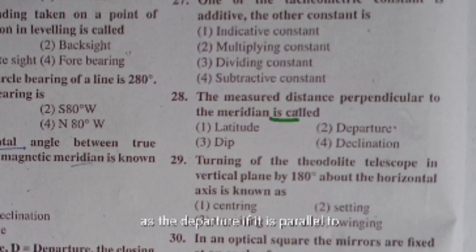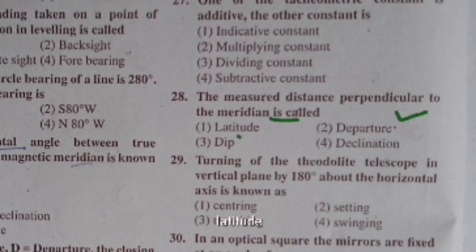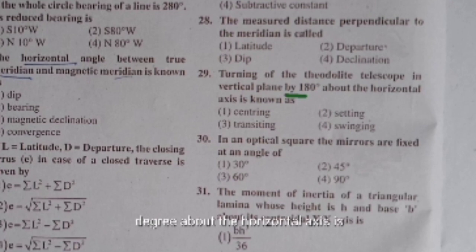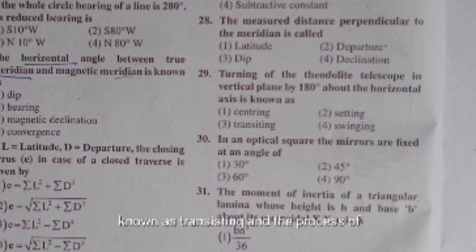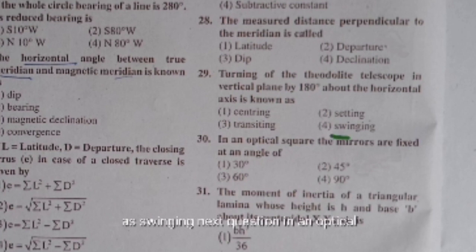The measured distance perpendicular to the meridian is called departure; if parallel to the meridian it is called latitude. Turning the theodolite telescope in a vertical plane by 180° about the horizontal axis is called transiting; turning in a horizontal plane about the vertical axis is called swinging. In an optical square, the mirrors are fixed at an angle of 45 degrees.